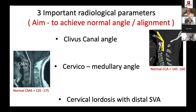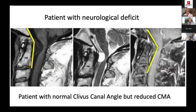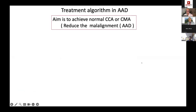The three key radiological parameters are: the clivus canal angle, the cervicomedullary angle, and the subaxial cervical lordosis. In one case, the clivus canal angle was normal but the cervicomedullary angle was reduced due to soft tissue compression.